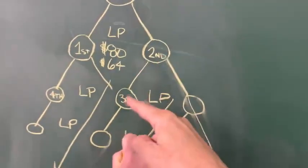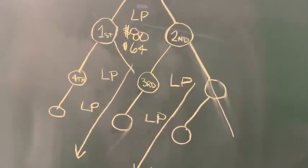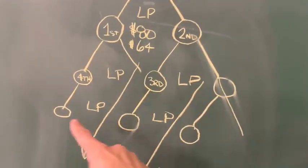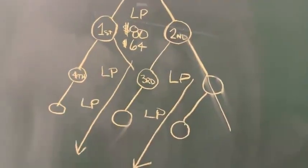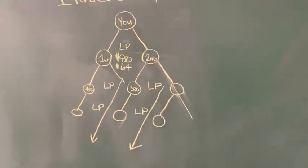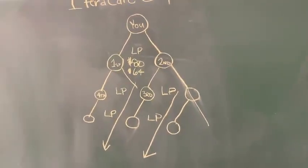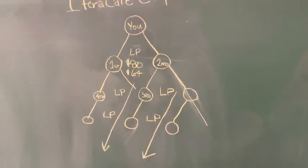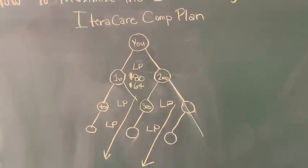When you go here and build your leg down on the inside inner leg to the left, you're getting the level pairing bonuses all the way down. So what you're going to create here is momentum with your people that you've enrolled and their people that they enroll building one long leg, and you will be capturing all of the level pairing bonuses.